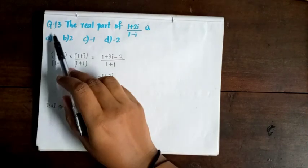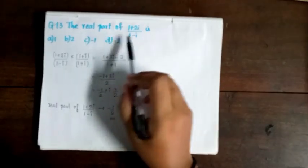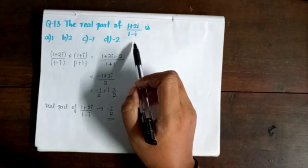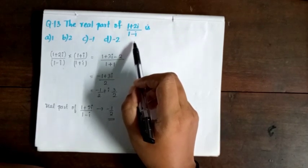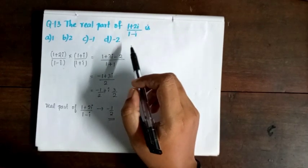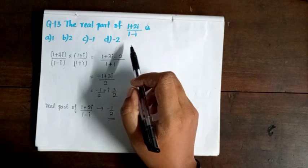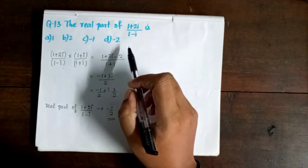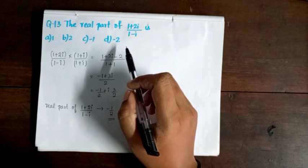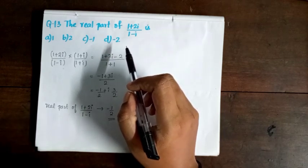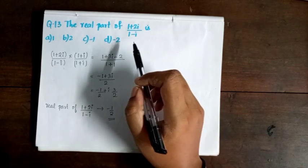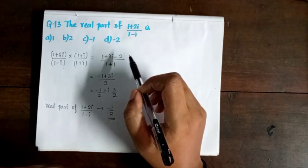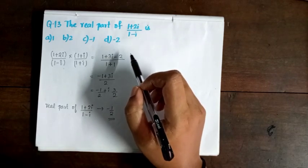Next question, 13. The real part of (1 + 2i) / (1 - i) is? We need to find the real part of this complex number. We will multiply and divide by the conjugate of the denominator.